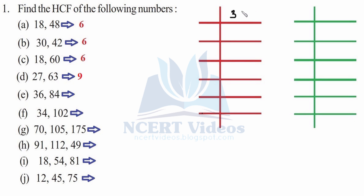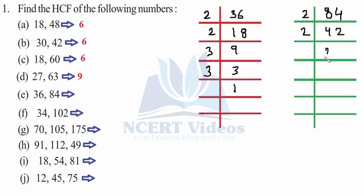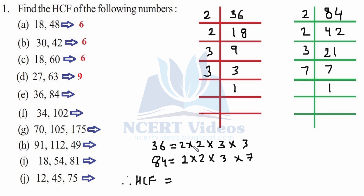Part e: 36 and 84. For 36: 2×18, 2×9, 3×3, giving prime factors 2, 2, 3, 3. For 84: 2×42, 2×21, 3×7, giving prime factors 2, 2, 3, 7. The common factors are 2, 2, and 3. So the HCF is 2×2×3 = 12. Twelve is the HCF of 36 and 84 for part e.